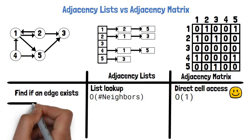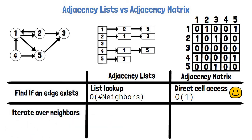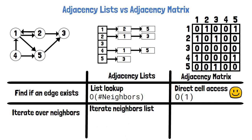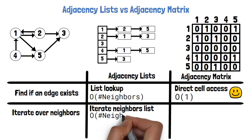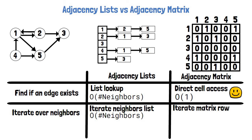Now suppose we want to iterate over the neighbors of a vertex — for example, to print all neighbors of a given vertex, which is very common in graph problems. In the adjacency list, we just iterate over the neighbor list, which is O of the number of neighbors. In the adjacency matrix, we need to go over the entire row to find all the 1s, including traversing all the 0s. So the time complexity is O(V). In this case, the adjacency list is faster.